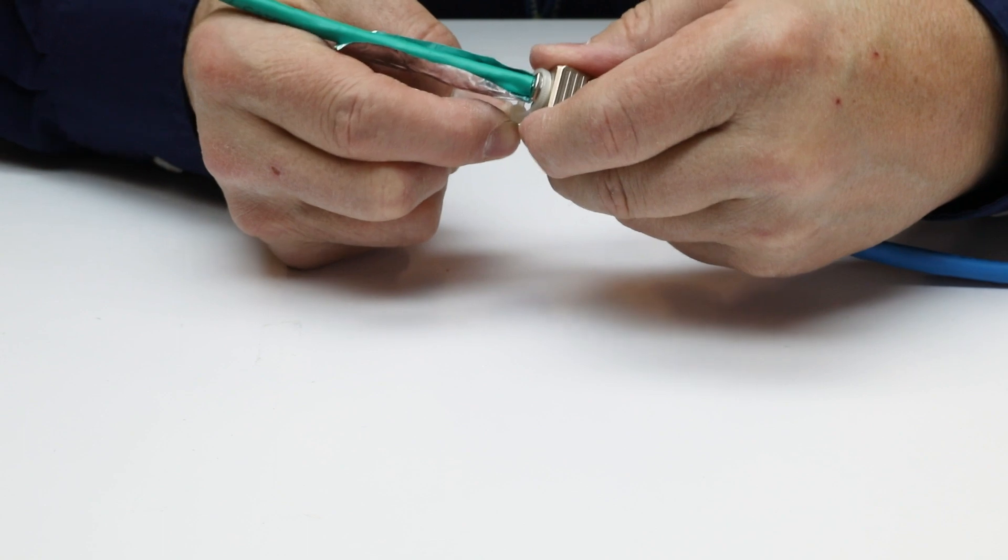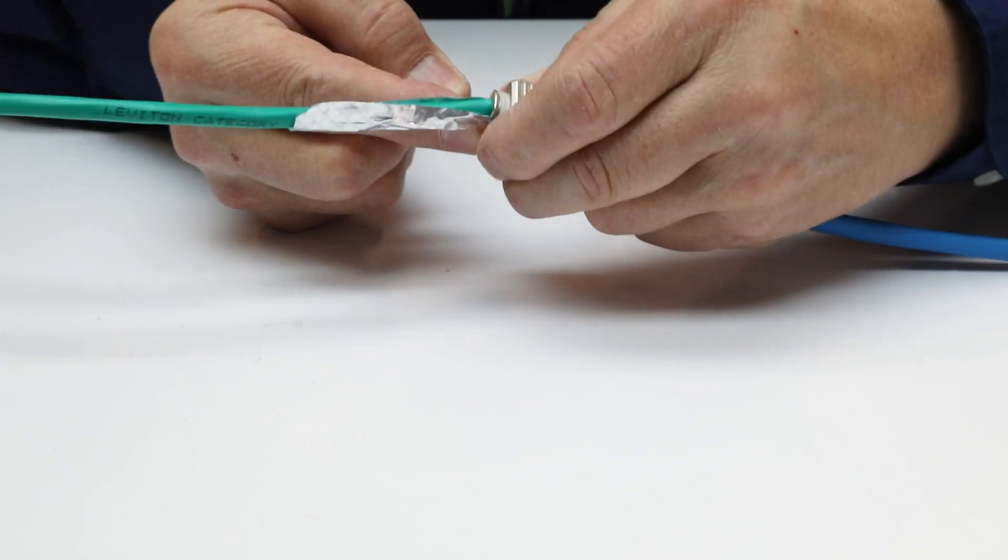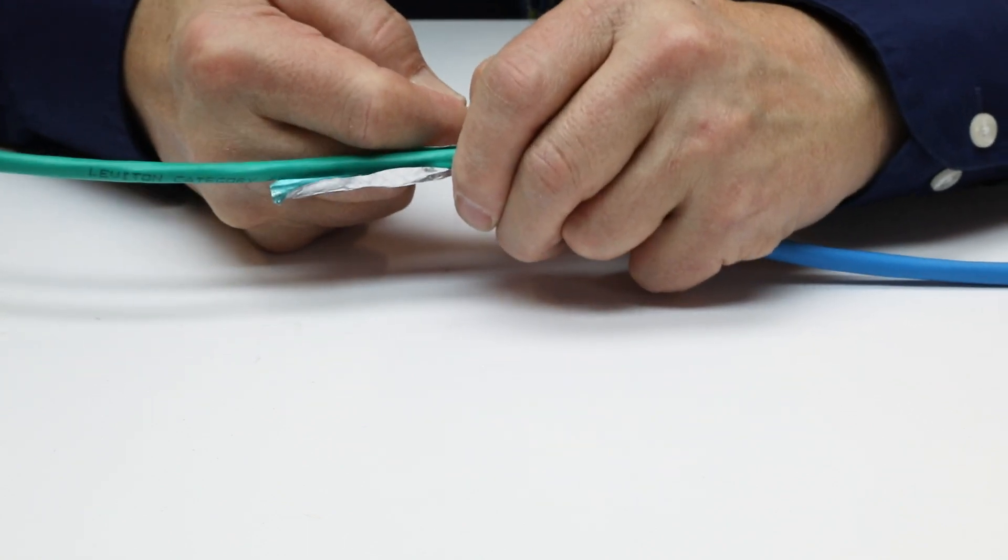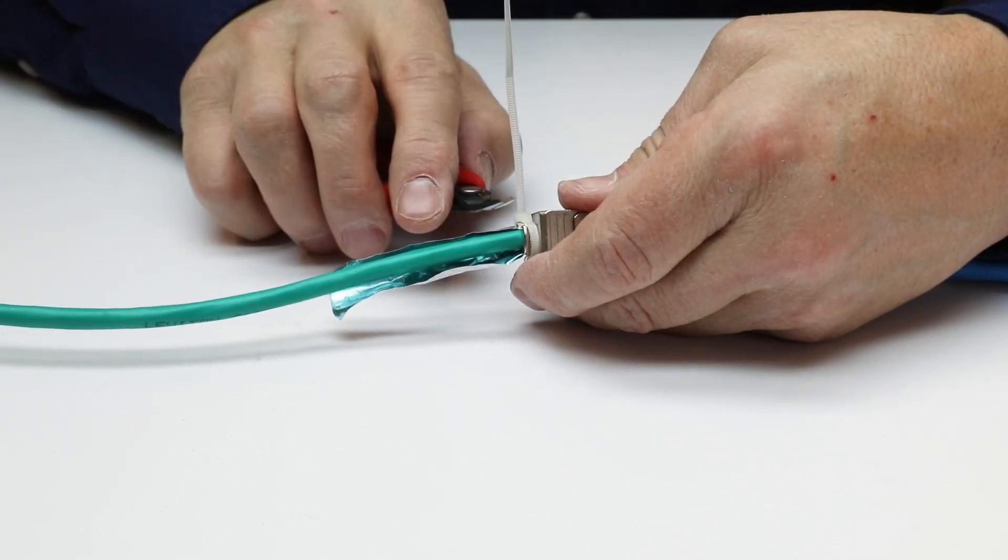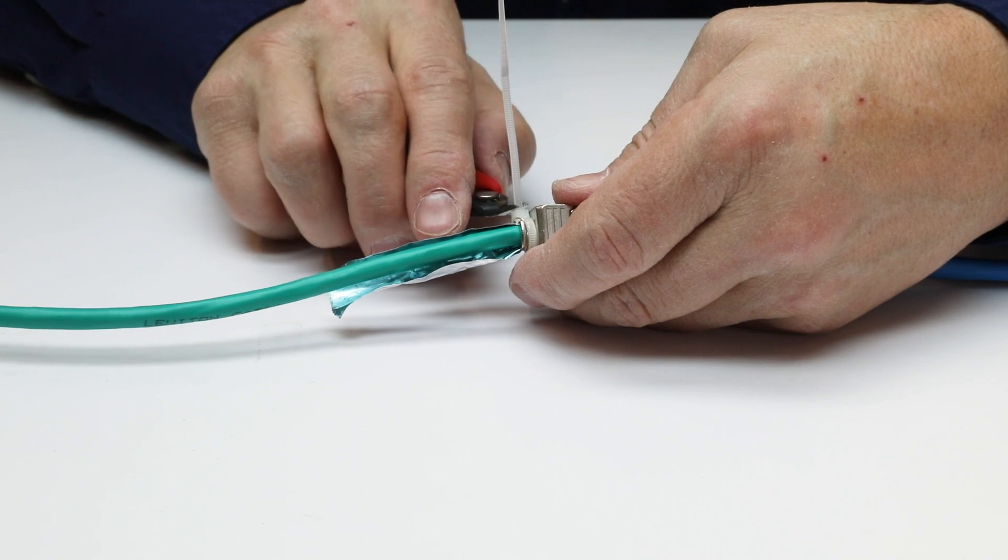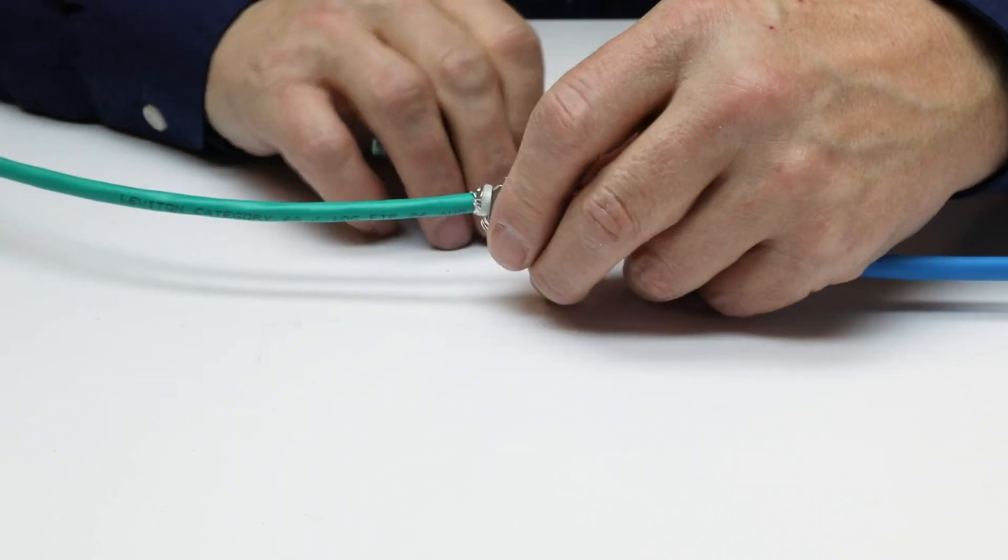Position the cable tie over the drain wire and secure the cable and drain wire to the device. It helps to secure the drain wire if the drain and cable tie are wrapped in the same direction. Cut off the excess foil and the cable tie tail.